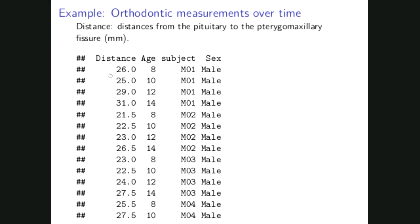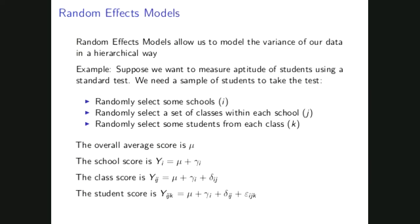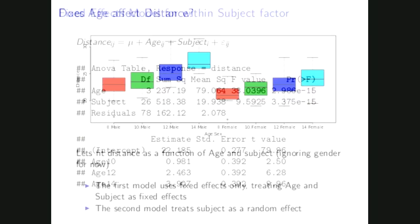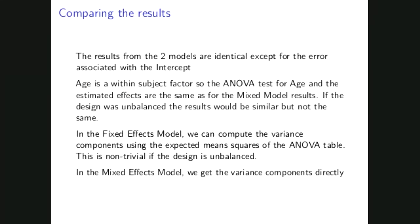If we take the average of the distances for each subject, then all four rows will turn into one row per subject. When we average the distance per each subject, we get one row per subject. We transform our data so that each subject is independent, and then the fixed effects model might work well — that's the assumption for using the fixed effects model.